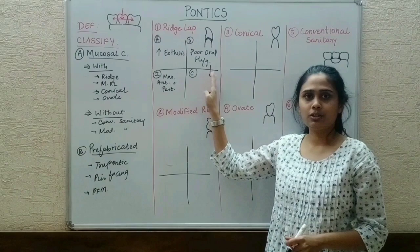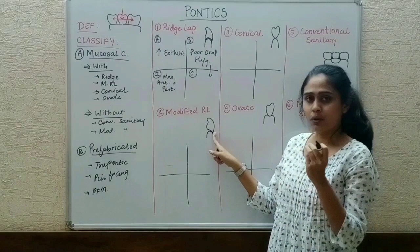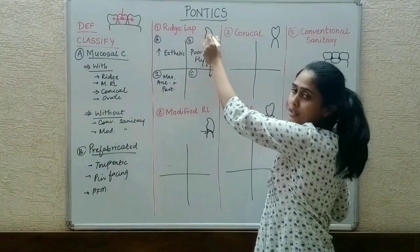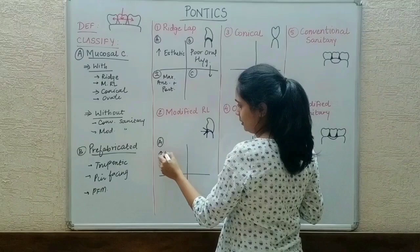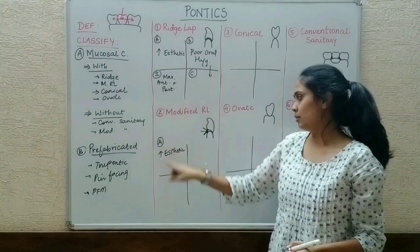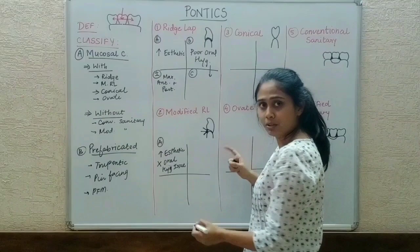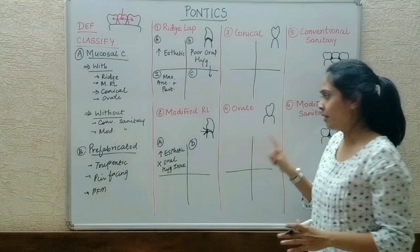Now for the modified ridge lap pontic — this is just a modification of the ridge lap, aimed at eliminating its disadvantages. In modified ridge lap, the pontic touches or adheres to the tissue surface only at one point — the buccal surface where aesthetic concern exists. On the lingual surface, a cleansable space is created. So the advantages are: it is highly aesthetic, and there is no oral hygiene issue because it is cleansable. The disadvantage is that it is not as cleansable as sanitary pontics — they are inferior in cleansing.